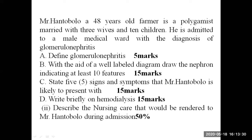In glomerulonephritis, the system affected is the renal system, and the structure being affected is the glomerulus. The glomerular capillaries are inflamed, meaning they cannot filter blood as they are supposed to. This condition impairs renal function — the renal system is supposed to filter toxins and excrete waste products, but because it is not functioning properly, proteins will be seen in urine due to impaired glomerular filtration rate.